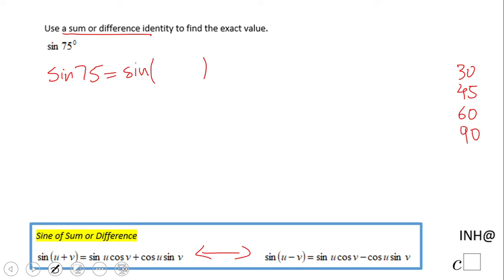is 30 plus 45, right? 30 plus 45 is 75, so we know this is a sum, so we're gonna use this formula and we're gonna have sin u, sin 30,